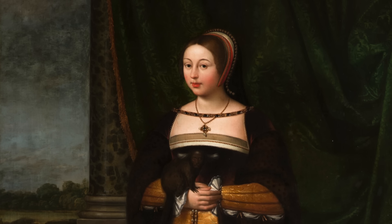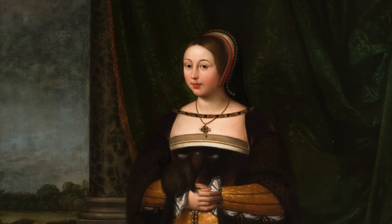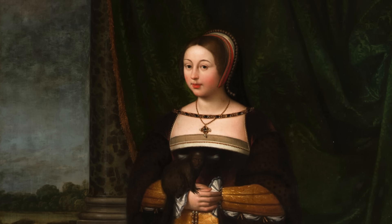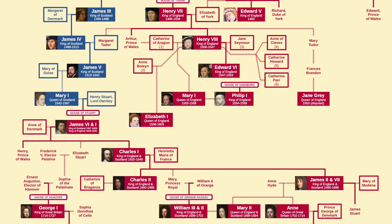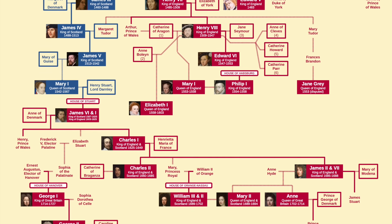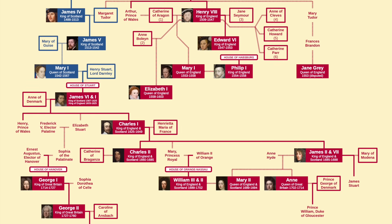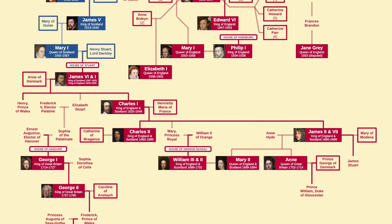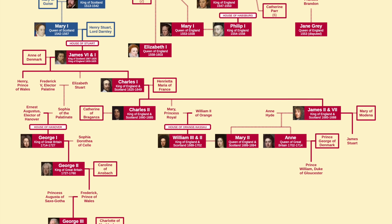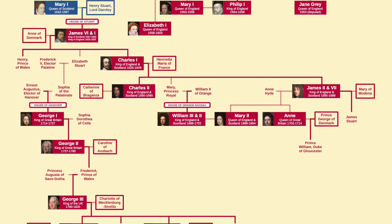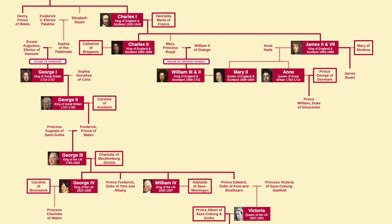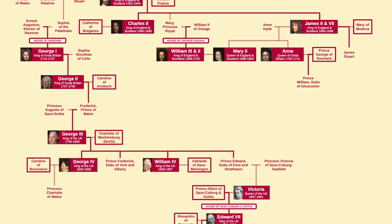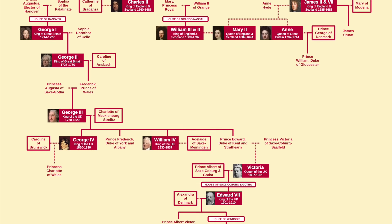Trazando entonces la línea de descendencia a partir del rey Enrique VII, pasando por unas 16 generaciones, podemos decir ahora que el actual monarca del Reino Unido desciende, por tanto, del fundador de la dinastía Tudor, a través de una de sus hijas.